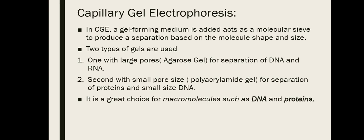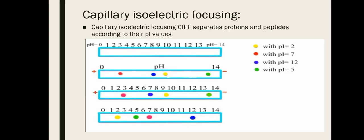Two types of gels are used in this electrophoresis: a gel with large pores and a gel with small pore size. For example, agarose gel has large pores and polyacrylamide gel has small pores. Large-pore gels are used for the separation of DNA and RNA, while small-pore gels are used for the separation of proteins and small-sized DNA. It is a great choice for macromolecule separation such as DNA and proteins.